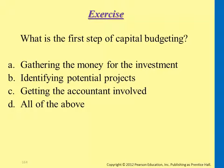Let's review some of the concepts in this chapter. The first step of capital budgeting means investing in an asset, so it would be identifying the potential projects that the company may be able to invest in — looking at which areas they need to improve.